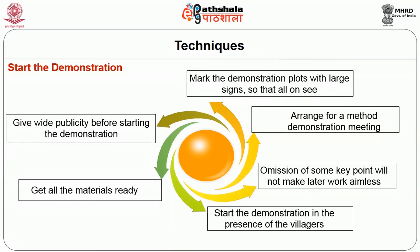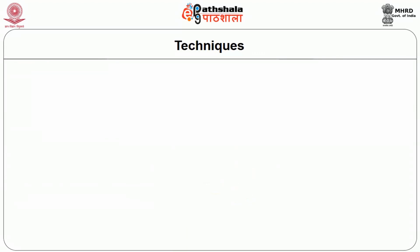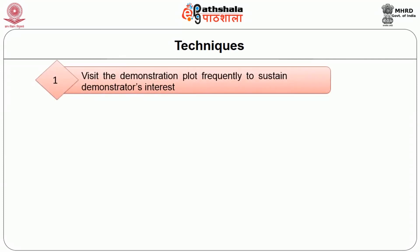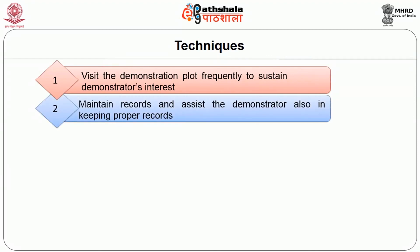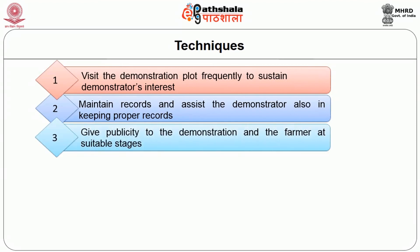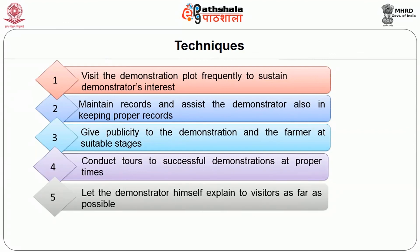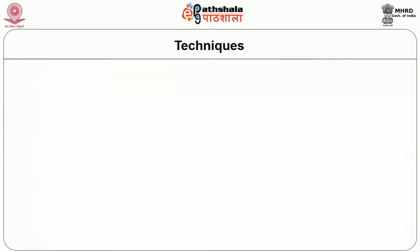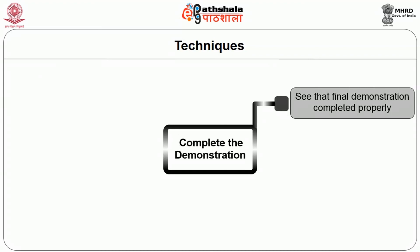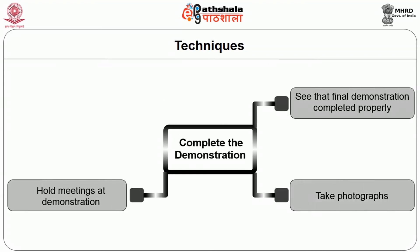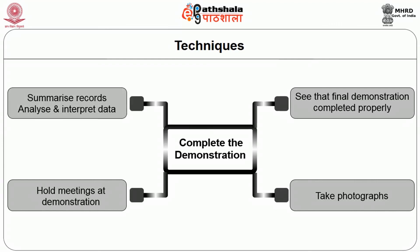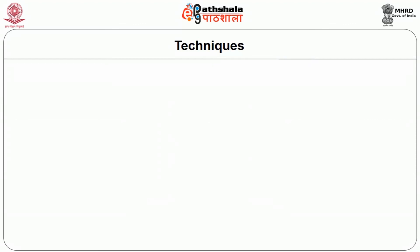The seventh step is to supervise the demonstration: visit the demonstration plot frequently to sustain the demonstrator's interest; check on progress; see that preceding steps are performed as already outlined; maintain records and assist the demonstrator in keeping proper records. Give publicity to the demonstration and the farmer at suitable stages. Conduct field visits at proper times; let the demonstrator himself explain to visitors as far as possible; mention the demonstration in news stories, circular letters, radio talks, etc. At critical stages, complete the demonstration properly, take photographs, hold meetings, summarize records, and analyze and interpret data.